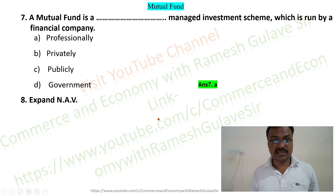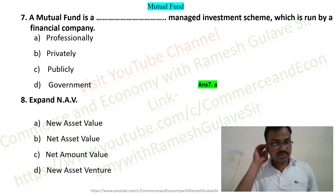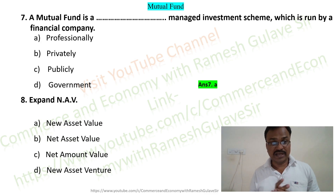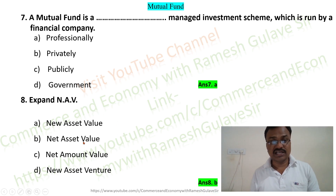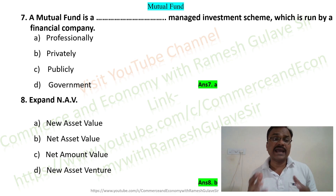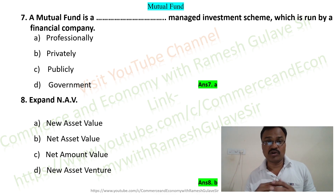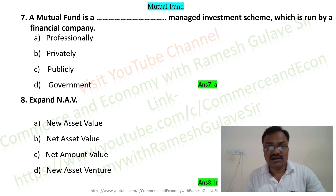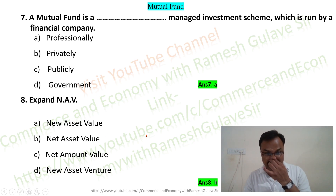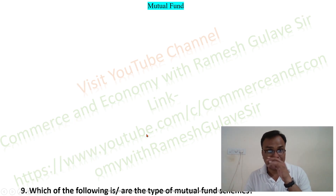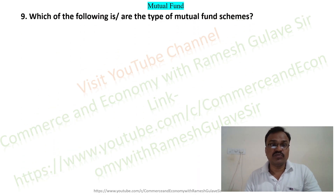The next question asks us to expand NAV. The options are Net Asset Value, New Asset Value, Net Asset Value, Net Amount Value, and New Asset Venture. NAV stands for Net Asset Value, so option B is the right answer. When you invest in a mutual fund, you buy units — that is, Net Asset Values are bought by investors. This value is decided based on the performance of the fund or scheme.